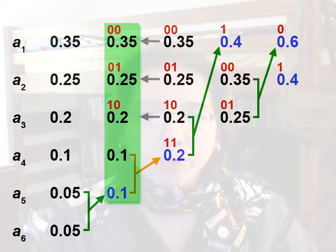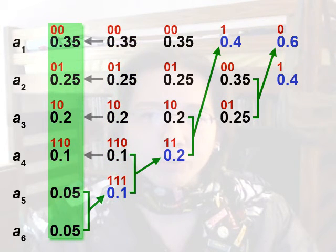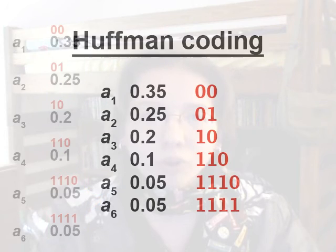Number 1 goes from 0.2 in the last list to 0.1 and 0.1, which are numbered 110 and 111. Move to the left and carry over the numbers for 0.35, 0.25, 0.2, and 0.1. Number 1 goes from 0.1 in the last list to 0.05 and 0.05, which are numbered 1110 and 1111. And we have our codewords.